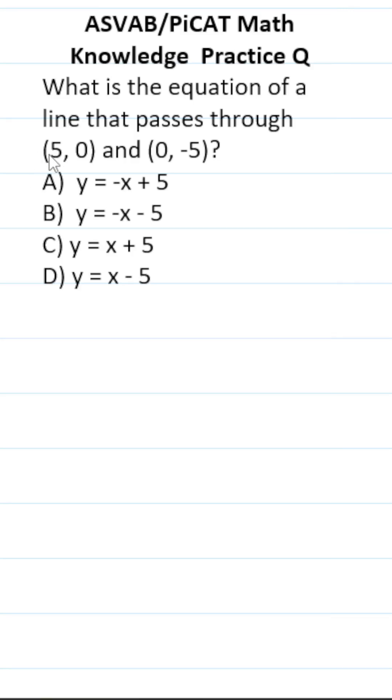This ASVAB PiCAT Math knowledge practice test question says: what is the equation of a line that passes through (5, 0) and (0, -5)?